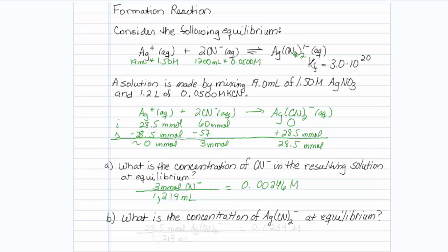What about my complex, my silver complex at equilibrium? I have 28.5 millimoles of my silver complex, and volumes are the same, 1219 mL. So, 28.5 divided by 1219 gives me a concentration of 0.0234 molar.